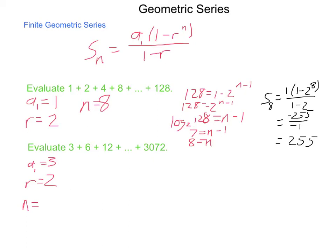3072 equals 3 times 2 to the n minus 1. Dividing by 3 gives us 1024 equals 2 to the n minus 1. Log base 2 of 1024 equals n minus 1. Log base 2 of 1024 is 10, so n equals 11.